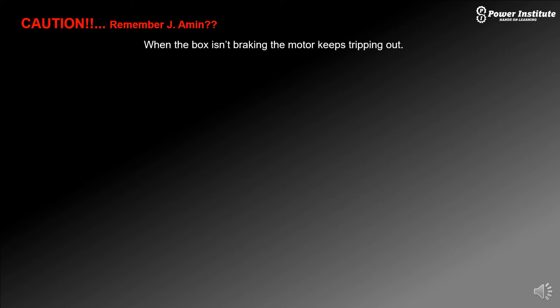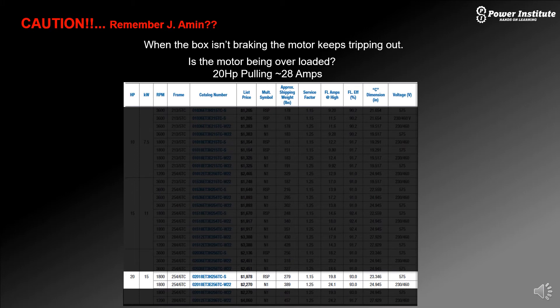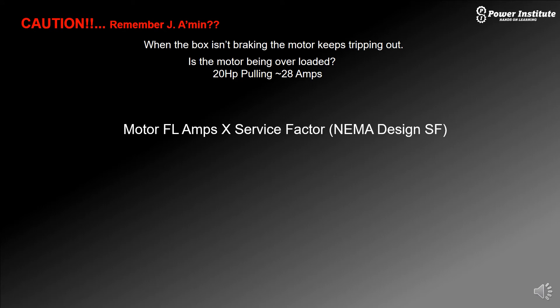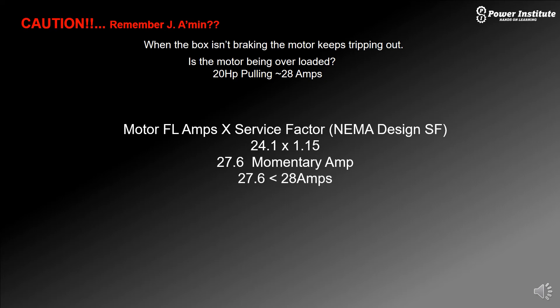Now remember what he said. He said when the box isn't breaking, the motor kept tripping out. So does that tell us the motor's overloaded? Let's check. We have a 20 horsepower motor pulling 28 amps. Looking at the motor manufacturer's catalog for this motor, we have a 1800 RPM standard North American motor, 20 horsepower, and they're rated for 24.1 amps. That's less than 28, but let's check the service factor on the motor. Motors have a built-in service factor based on NEMA. You take that 24.1 times the 1.15 built-in service factor. That gives us 27.6 amps that it could take for a short amount of time. It's still pulling more amps than the motor is rated for. So we can consider that a larger motor is needed. If we have a 20 horsepower, we'll probably go up to a 25 for this application.